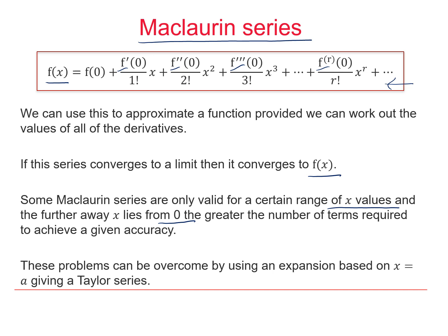These problems can be overcome by using an expansion based on x equals A rather than this expansion which is based on x equals zero. When we replace zero with A this then becomes the Taylor series.